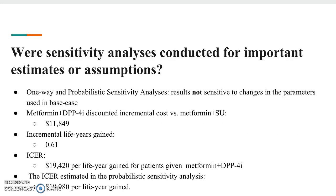Sensitivity analyses were conducted for important estimates and assumptions. The one-way and probabilistic sensitivity analysis found that results were not sensitive to changes in the parameters used in the base case. The metformin and DPP-4 inhibitor discounted incremental cost versus metformin and sulfonylureas was $11,849. The incremental life years gained was 0.61, and the ICER was $19,420 per life year gained for patients given metformin and DPP-4 inhibitors. The ICER estimated in the probabilistic sensitivity analysis was $19,980 per life year gained, confirming results were not sensitive.